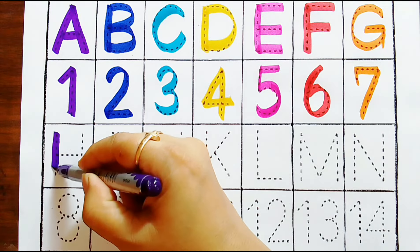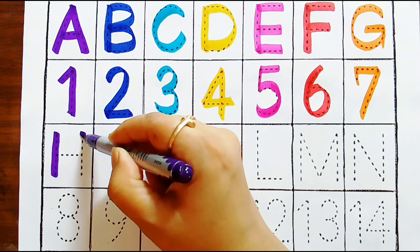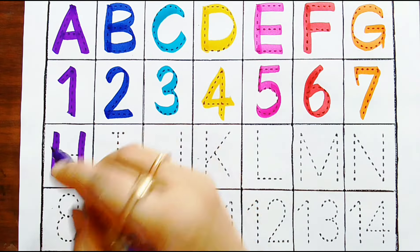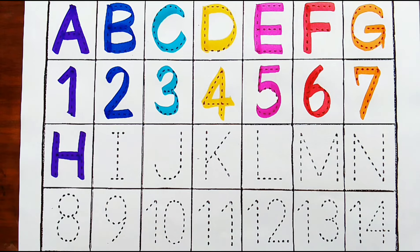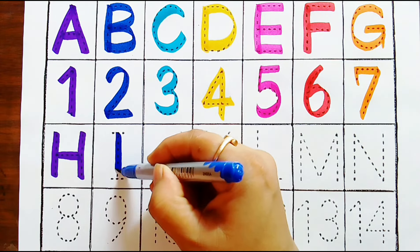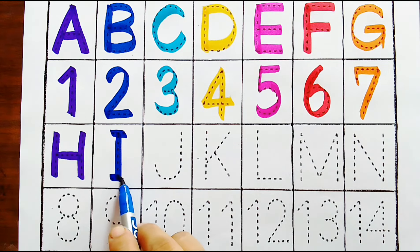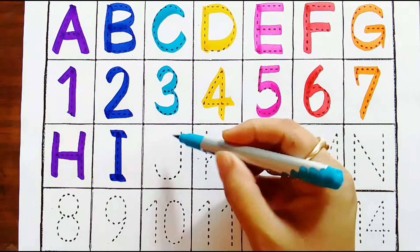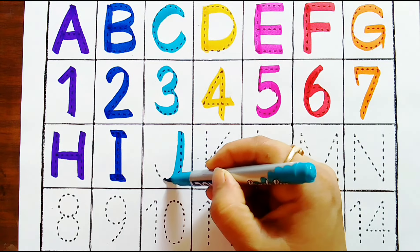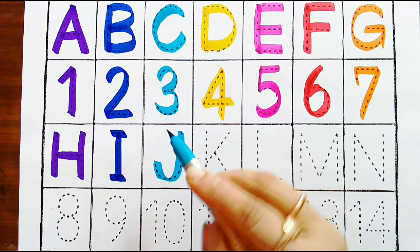Alphabets: violet color — H. Blue color — I. Sky blue color — J.